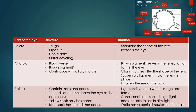The choroid has blood vessels and a brown pigment, and it is continuous with the ciliary muscles, which attach via the suspensory ligaments to the lens. The brown pigment prevents the reflection of light in the eye by absorbing some of the light, so that light doesn't reflect all around inside the eye. The ciliary muscles alter the shape of the lens. The suspensory ligaments hold the lens in place. The iris alters the size of the pupil, which we'll cover in the pupillary mechanism.